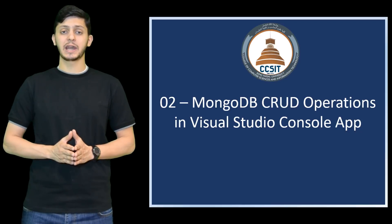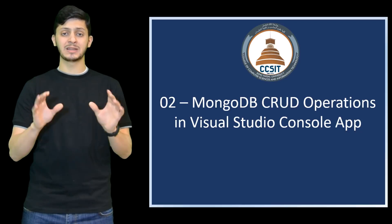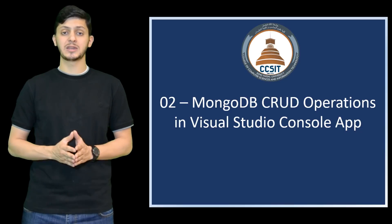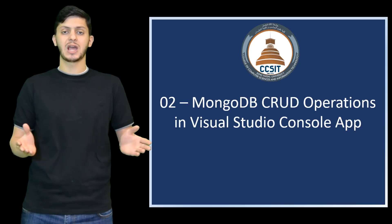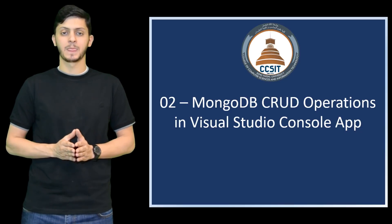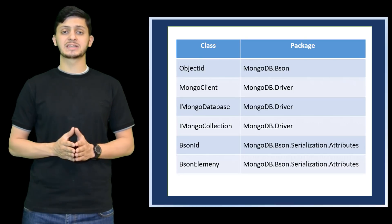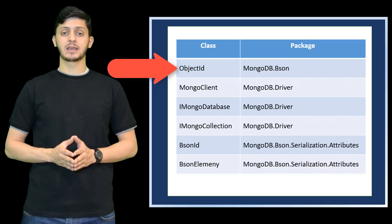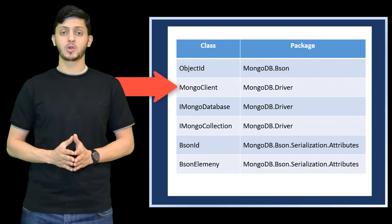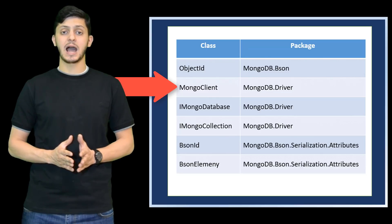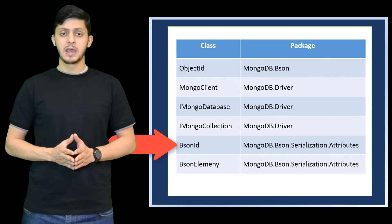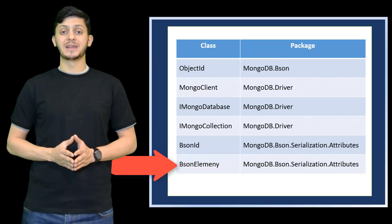In this lesson, we will learn how to implement code for create, read, update, and delete operations on MongoDB through Visual Studio's console application. We will be using several classes in our project such as Object ID, Mongo Client, iMongo Database, iMongo Collection, BSON ID, and BSON Element.